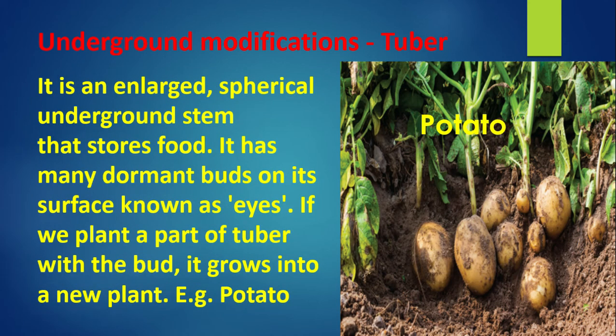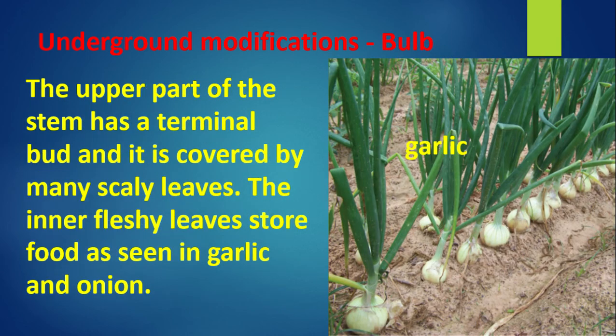Tuber: It is an enlarged spherical underground stem that stores food. It has many dormant buds on its surface known as eyes. If we plant a part of a tuber with a bud, it grows into a new plant. For example, potato. Bulb: The upper part of the stem has a terminal bud covered by many scale leaves. The inner fleshy leaves store food, as seen in garlic and onion.